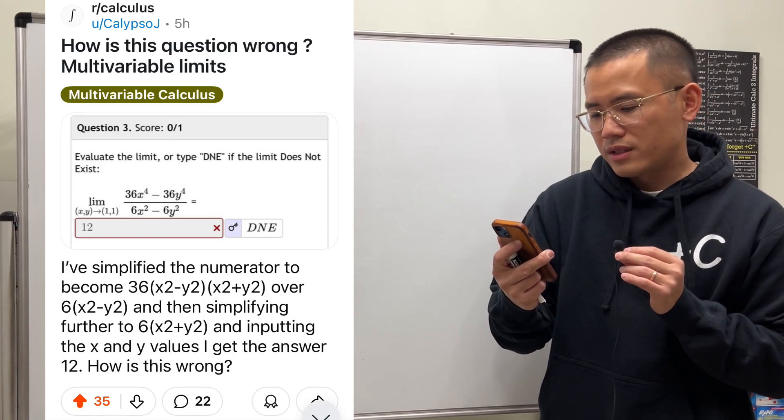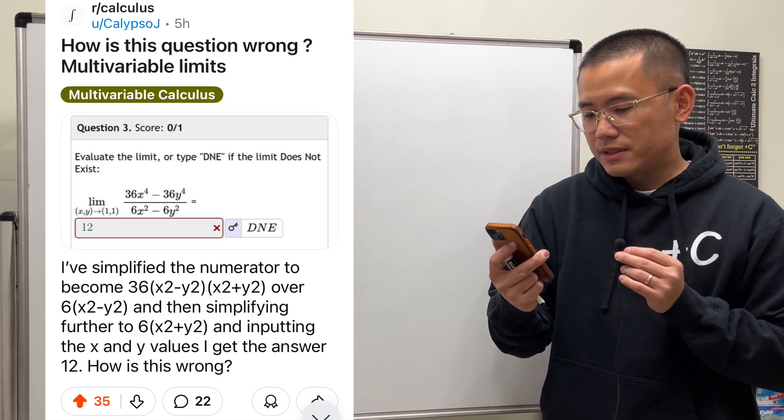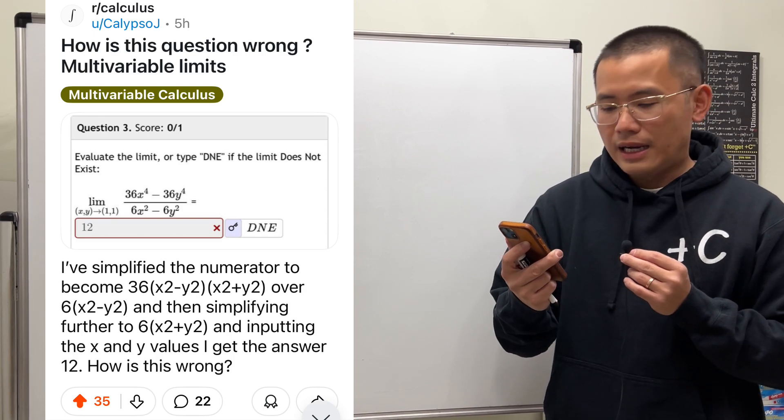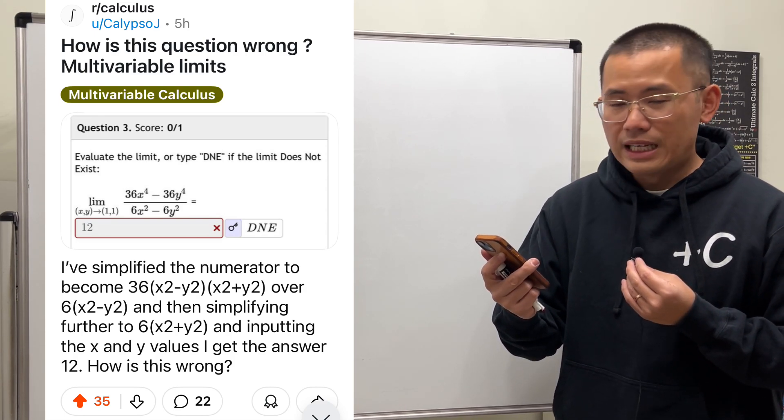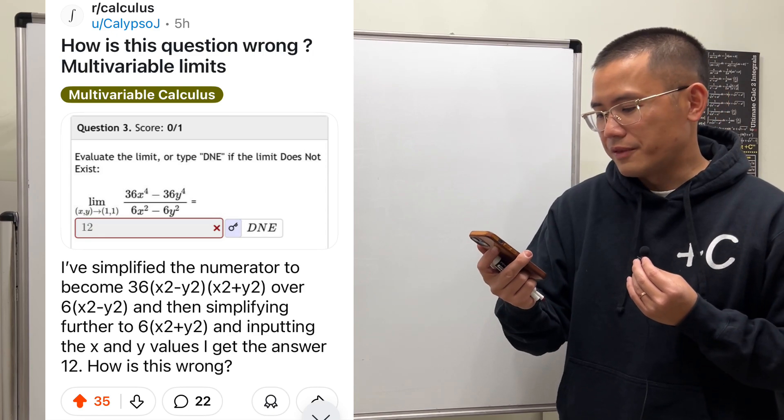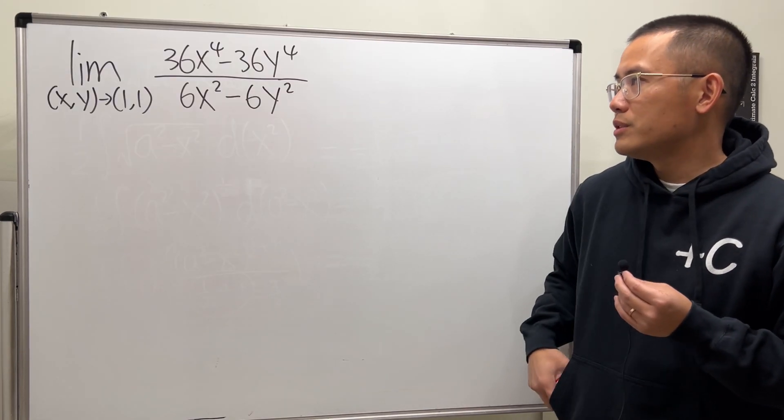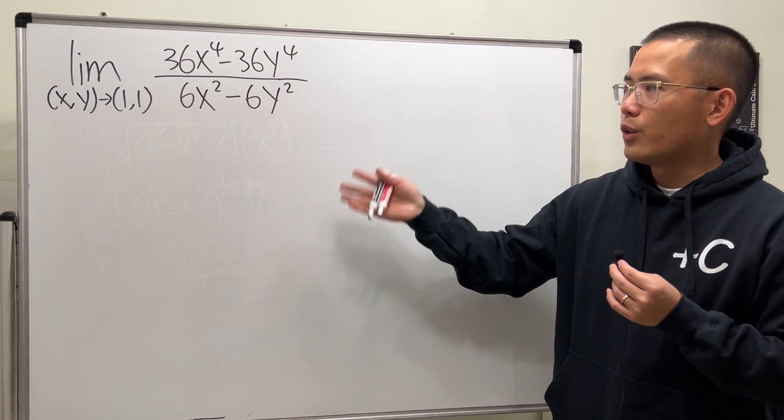How is this question wrong? Multivariable limits. Okay, let me tell you, I saw your post on Reddit. I have no idea either because I agree with you - the answer should be 12 instead of DNE. So let me just show everybody how we get to the 12.